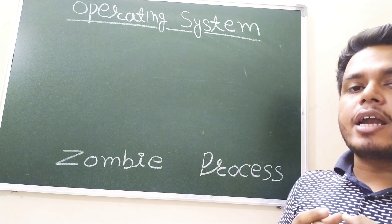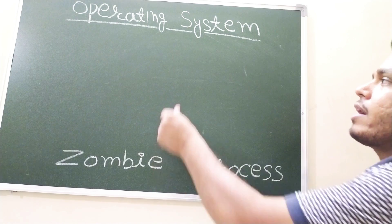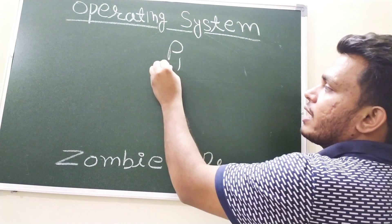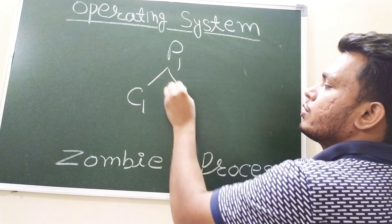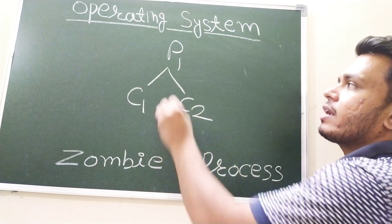So when a child process, suppose there is a parent process P, it has two children C1 and C2. We are considering this case.